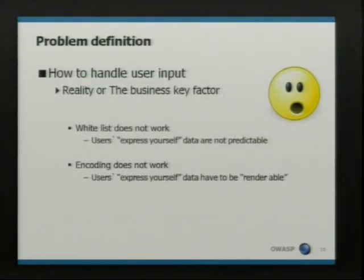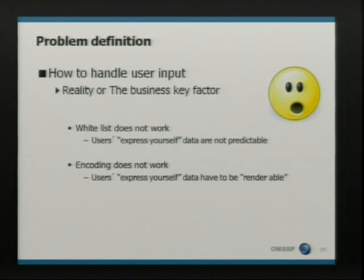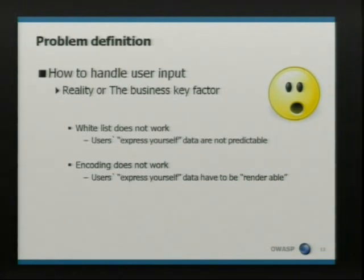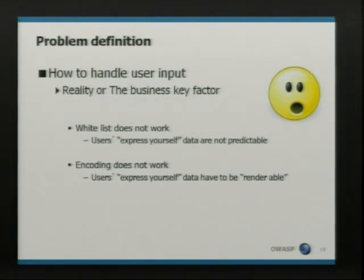So the reality is completely different. We have the theory and we have the practice, and we know those are two pairs of shoes. The reality is that the whitelist approach does not work at all because user data is not predictable in every case. And if you allow users to put Flash files — an example: the previous talk about Flash parameter injection was very good — you know how easy it is to break a cross-site scripting filter through a vulnerable Flash file. On the other side, encoding output does not work because the user's data must be renderable. If a user wants a pink background color, you should allow that. And if a user wants to embed images, that's something you also have to allow.